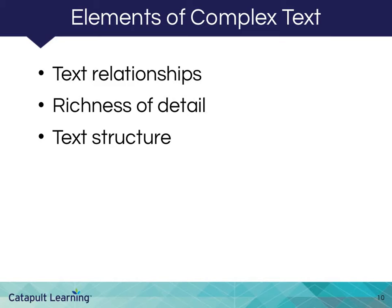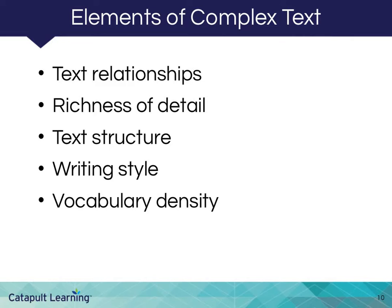Complex texts also exhibit higher intertextuality, which requires readers to meaningfully connect to references and allusions to other texts or knowledge. Finally, complex texts are likely to be lengthy and demand readers to discern essential ideas from supporting details. The way information and ideas are organized becomes more elaborate in complex texts. A central facet of comprehension of complex texts is awareness of text structure and the ability to track how authors develop explanations, arguments, and ideas. Additionally, more than one single idea between ideas might be present, and literary texts may adopt less straightforward methods of narration.